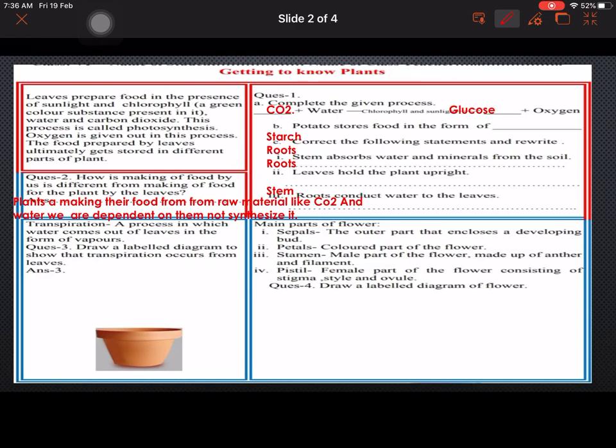Question number one: Complete the given process. Carbon dioxide plus water in presence of chlorophyll and sunlight will give you glucose and oxygen. Potato stores food in the form of starch. You have to correct the following statement.